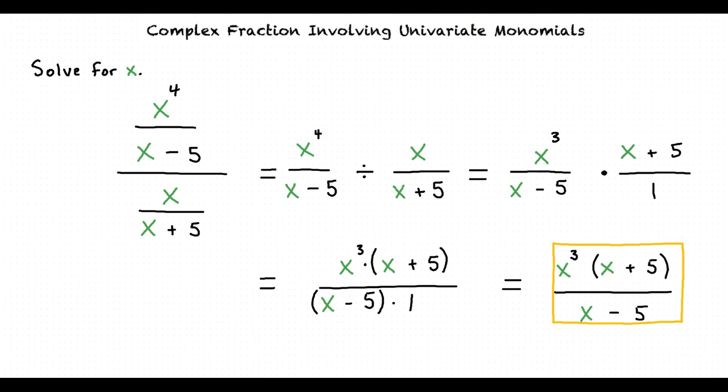Let me see if I have this all straight. First we rewrite the fraction as a division problem. Next, instead of dividing by a fraction, we multiply by the reciprocal of that fraction. From there, we can cancel the common factors and multiply the fractions. This results in our final answer. That's exactly right. Great work.